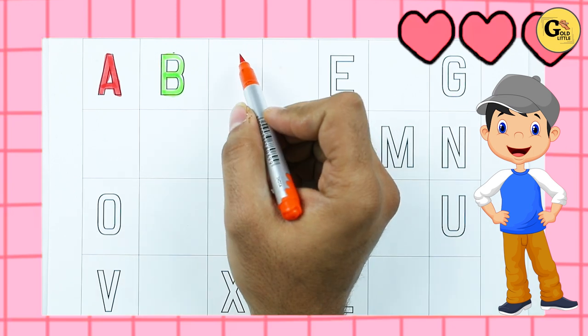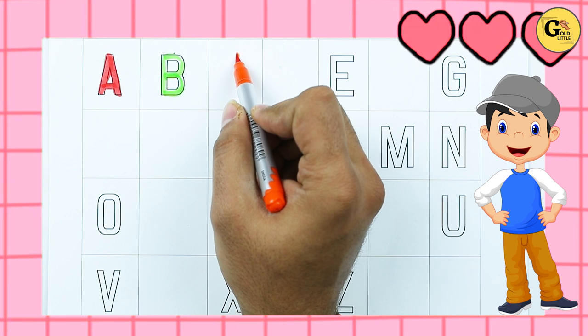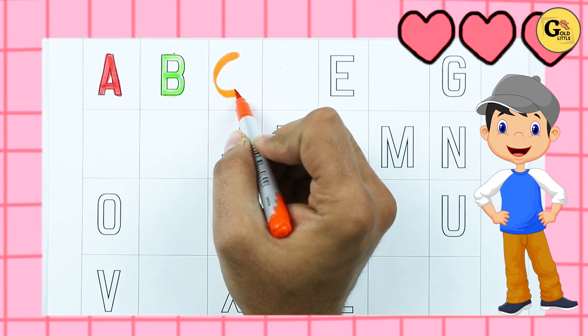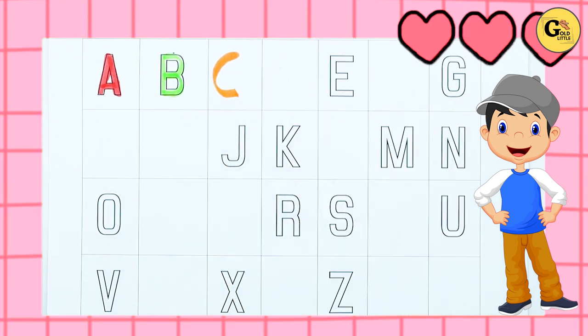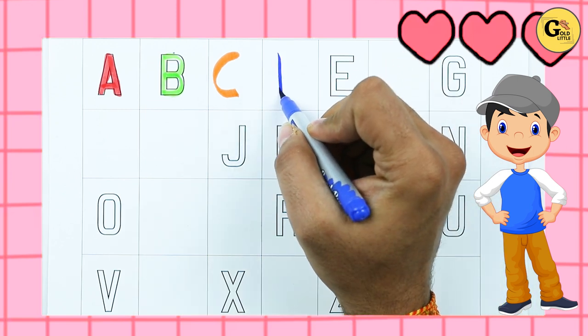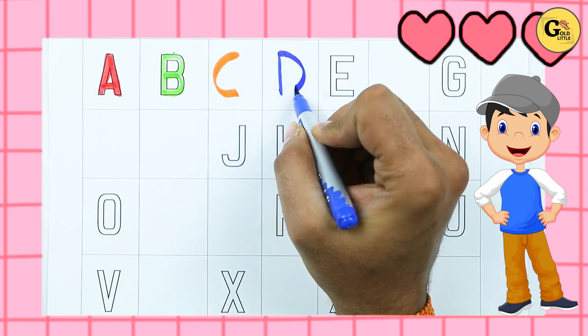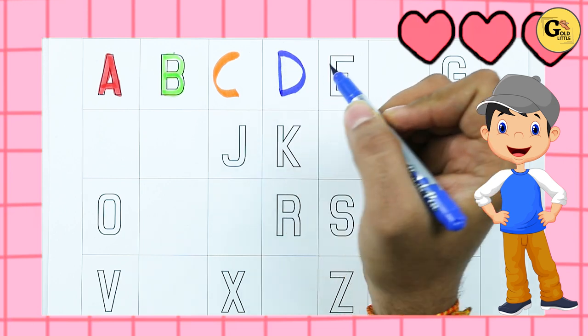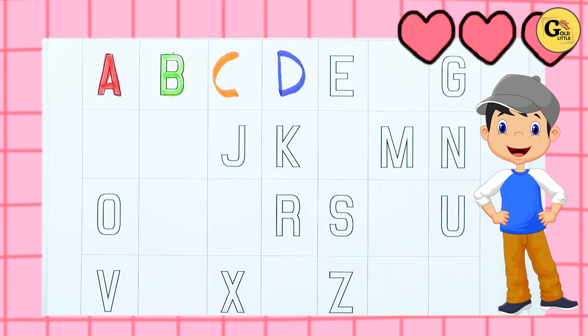C. What's next? C with orange color. C for cat. What next? Tell me. Yes, right. D. D for dog with blue color.